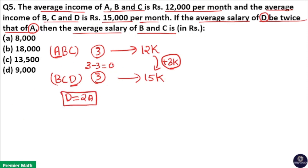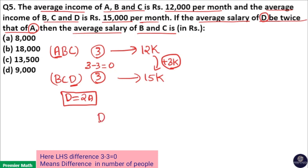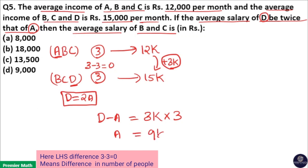D has more salary, so when left hand side difference is 0, D minus A is the difference on the left hand side. Since left hand side difference is 0 but data has a difference of D minus A, we get D minus A equals right hand side difference of 3K multiplied by the total number of people which is 3. So D minus A equals 9K. Since D equals 2A, we get 2A minus A equals A, so salary of A equals 9K.